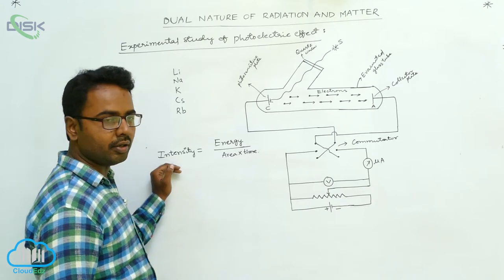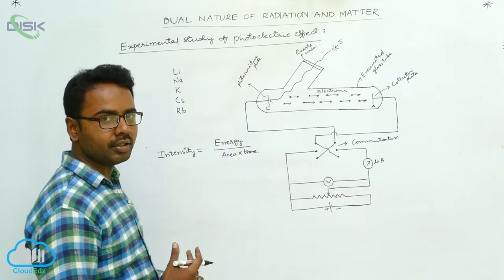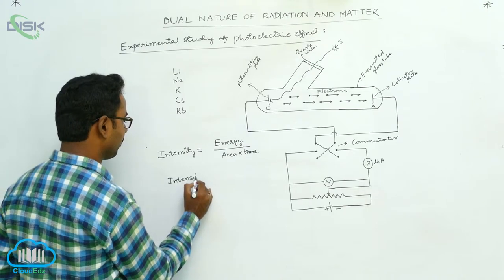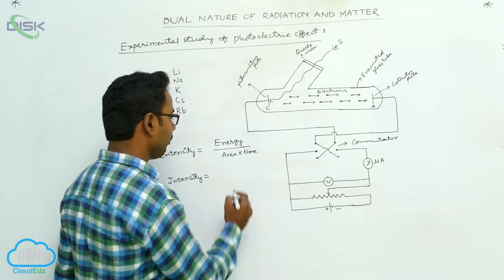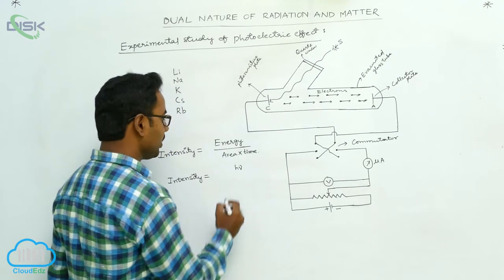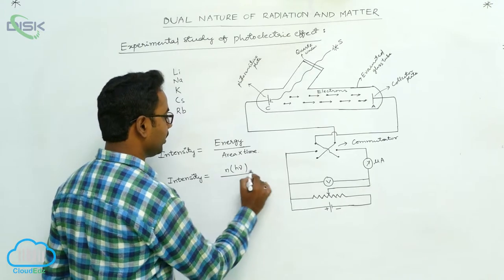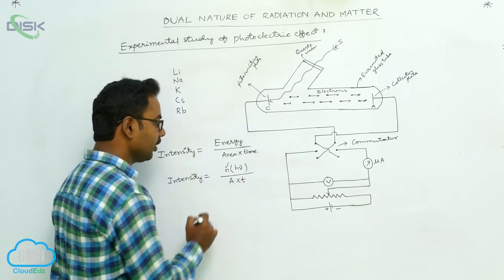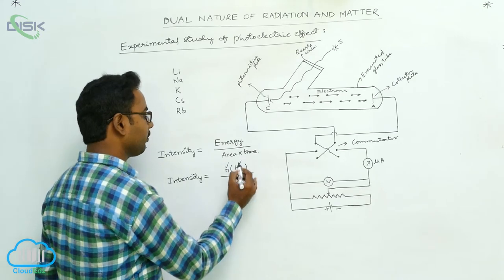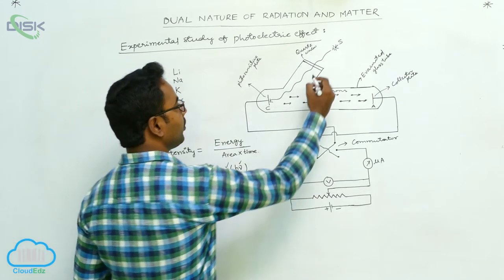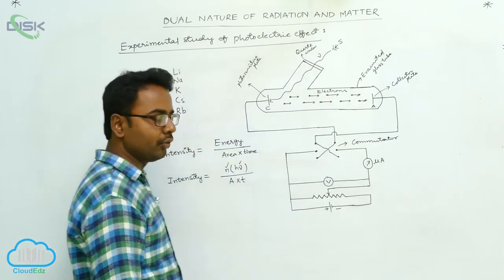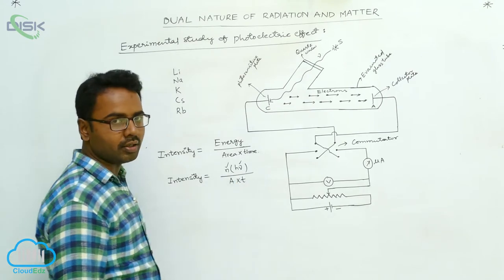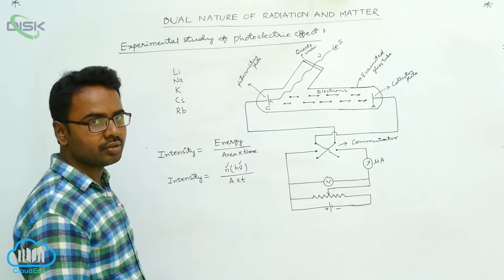When we vary the intensity, we are varying the energy. For one photon, energy is hν. If light contains n number of photons, intensity is n×hν per unit area per unit time. So intensity is varied by changing the number of photons. For a fixed frequency ν of incident radiation, intensity can be changed by changing the number of photons.